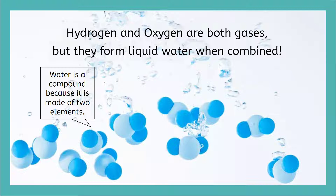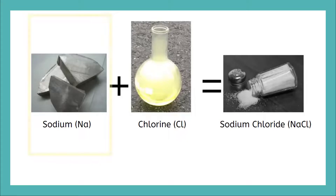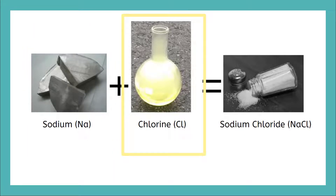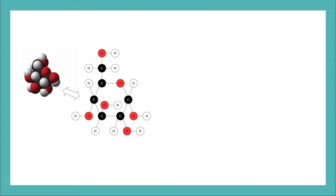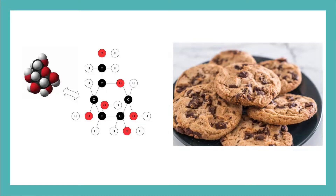Here are some other examples of elements combining to create compounds. Sodium, a soft silvery and highly reactive metal in the presence of air, will react with chlorine, a yellowish-greenish toxic gas, to form the compound sodium chloride — or as you may know it, table salt. Want to have some real life fun with your newfound science knowledge? The next time you're at dinner, wow your family members by asking them to pass the sodium chloride. Carbon, a non-metal solid, reacts with hydrogen and oxygen to form the compound glucose, which is a type of sugar found in your grandma's secret chocolate chip cookie recipe.